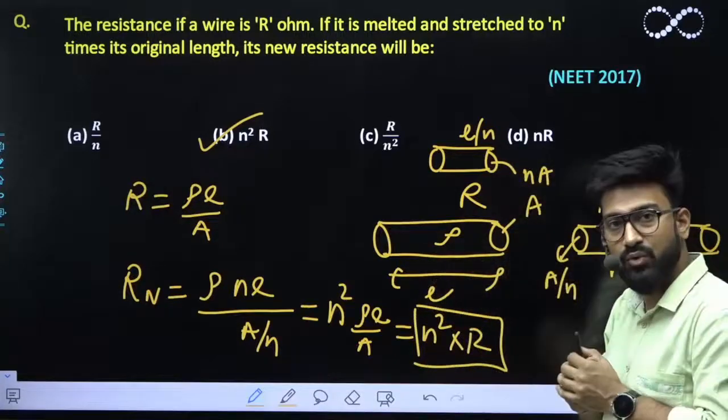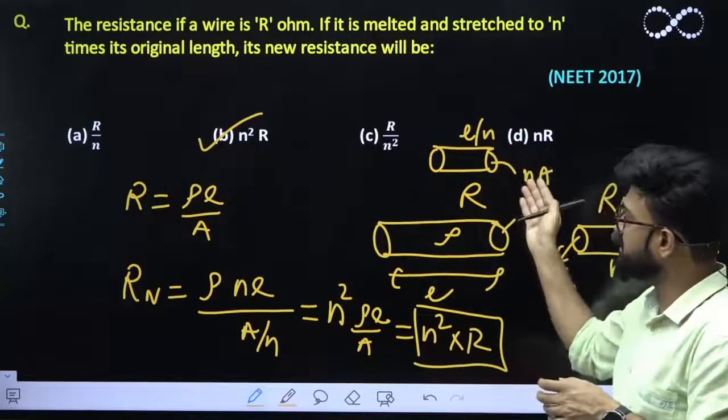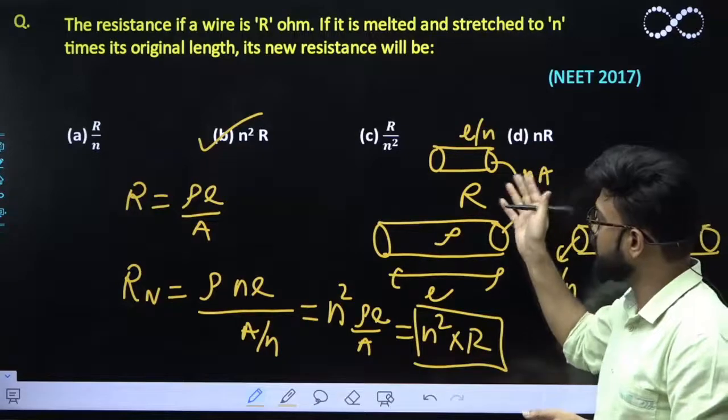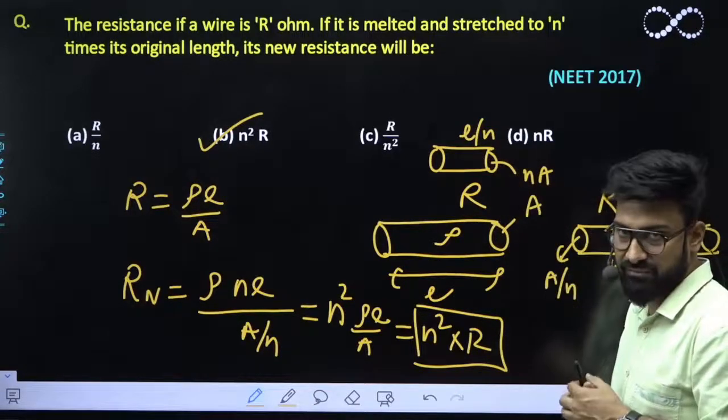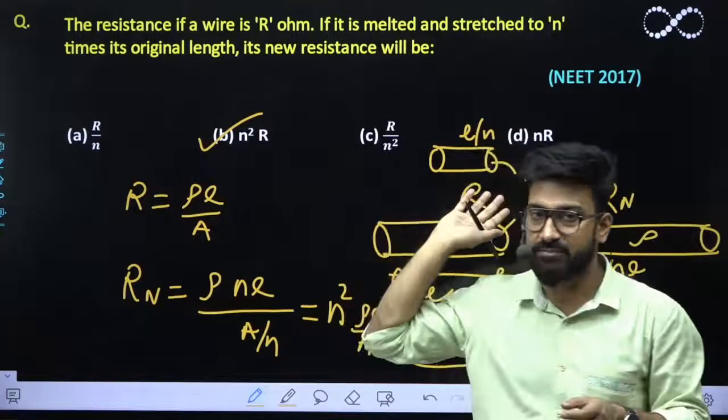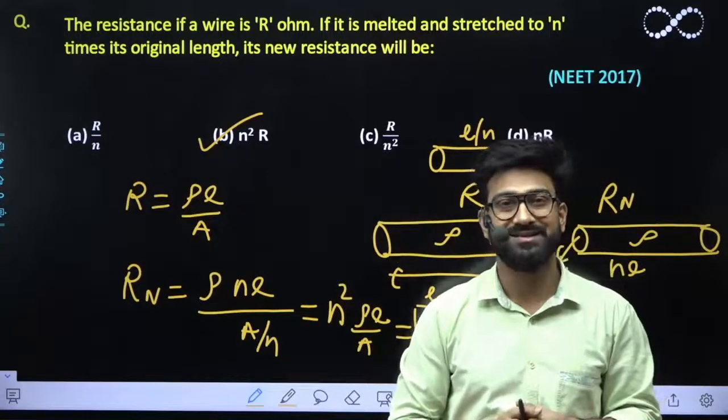So this is a relationship that you can easily calculate. Eventually you can also calculate the new resistance that it can have. So the answer would be n² into R. I hope this question is clear to everyone. Thank you.